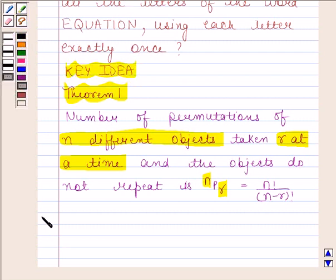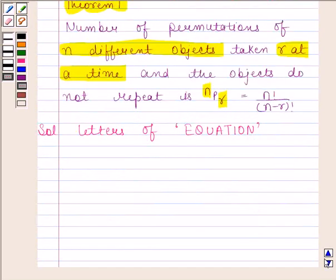Let's now begin with the solution. The letters of the word equation are E, Q, U, A, T, I, O, and N. We have to find number of words with or without meaning that can be formed using all these letters when each letter is used exactly once.